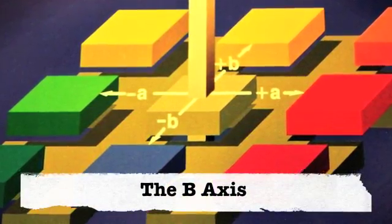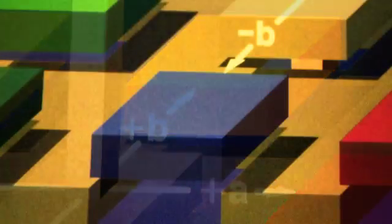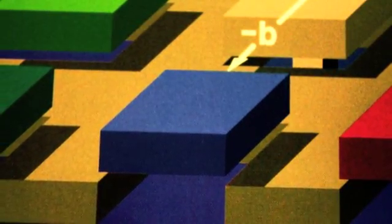Last is the B-axis, which represents the blue to yellowness of the product. A positive B-value would be a more yellow product, while a negative B-value would be a more blue product.